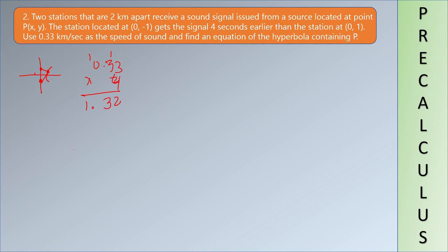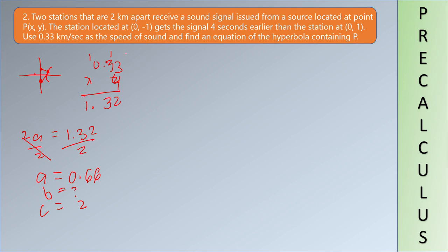It was 5.32, so A is positive 0.66. This value is 2, and this is the missing variable. We're going to use the same approach. A is very nice — 6 squared is equal to a squared plus b squared.